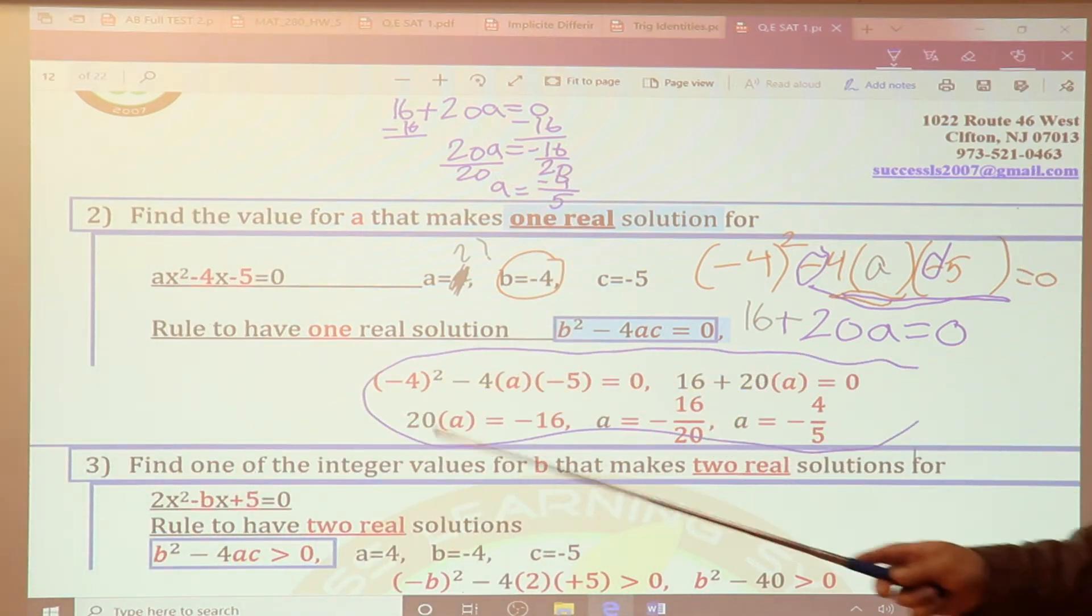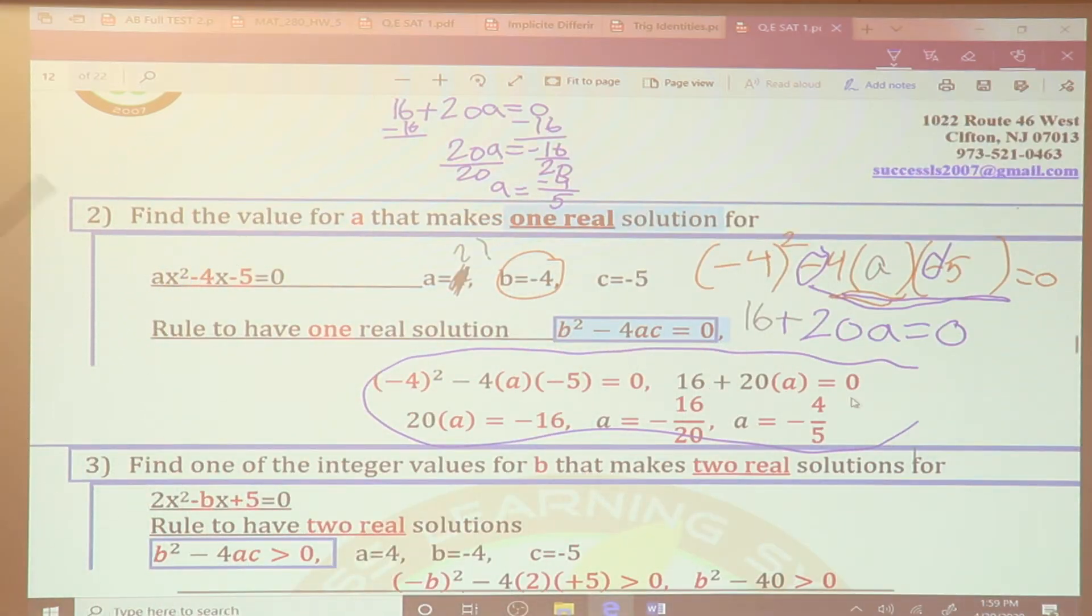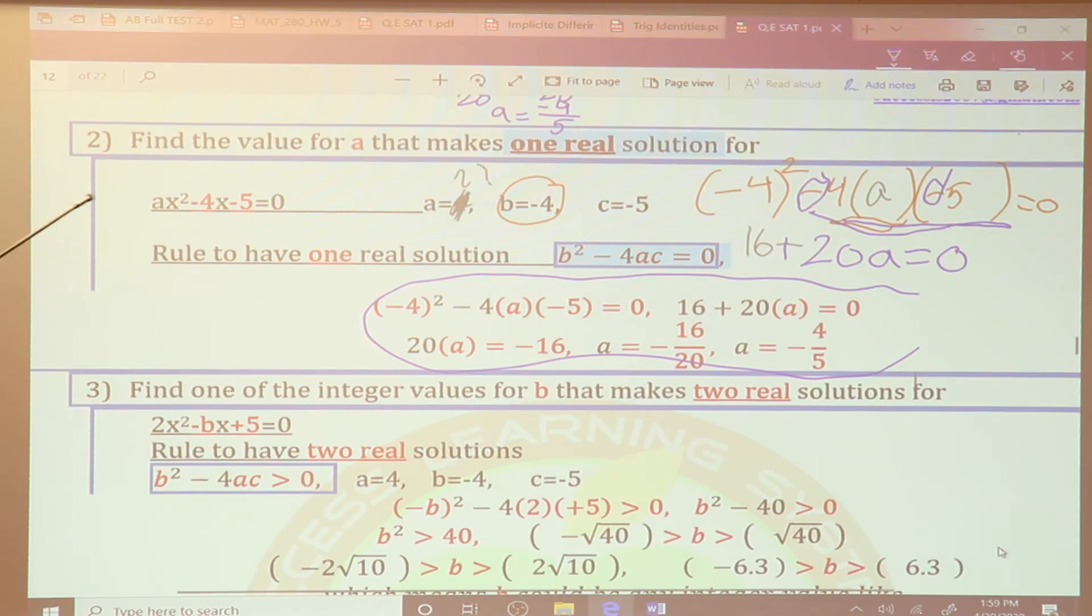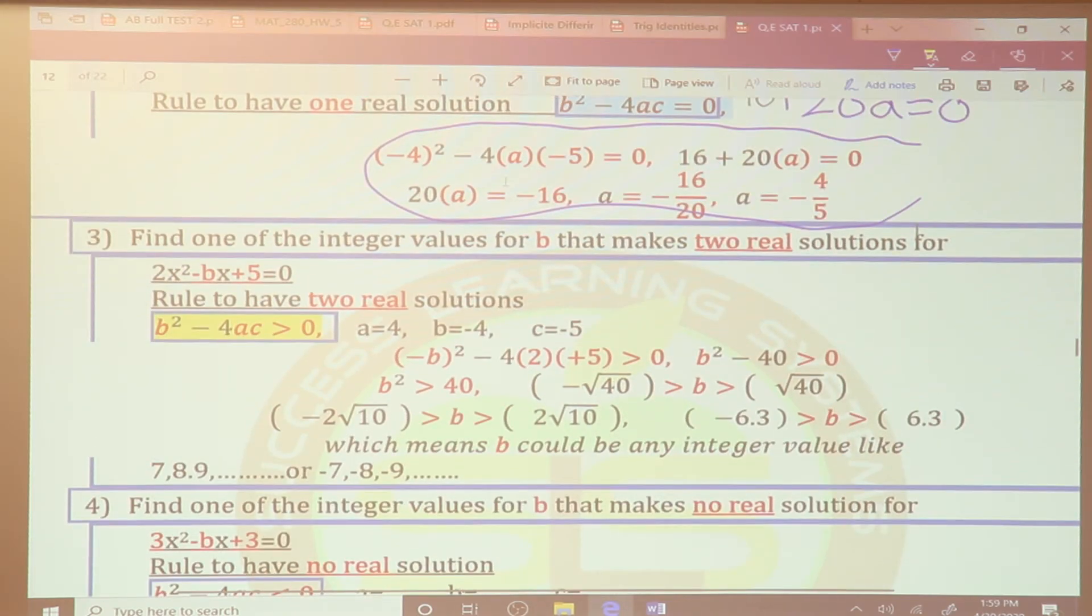Now the last case. The last case, which is we discussed no real solution, one real solution, and two real solution. Two real solution, meanwhile guys, you have to make this guy, look here, greater than 0. And then two real solution meanwhile B squared minus 4AC, the same thing.